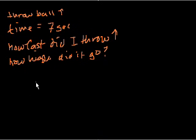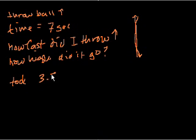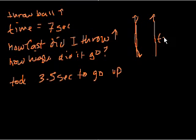So it took 7 seconds. The ball took 7 seconds to go all the way, to go up and then to go down. And assuming no air resistance, it took the same amount of time to go to its peak as it took to go down. So it took 3.5 seconds to go up, and then it took another 3.5 seconds to go down.